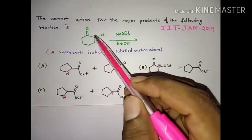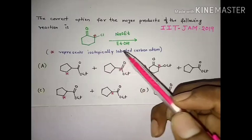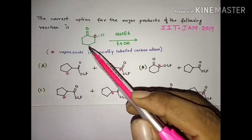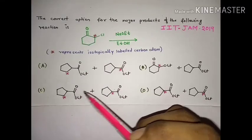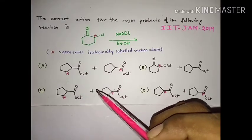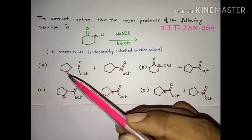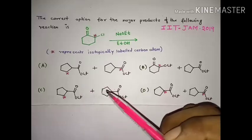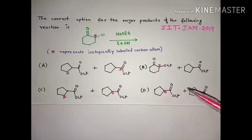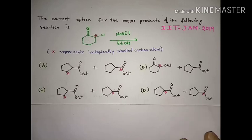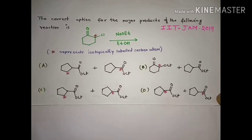The star represents the isotopically labeled carbon atom. We have to derive the mechanism and determine which product will form. In two options the products are the same but the position of the star - the labeled carbon - is different. There are three options that are almost the same. To distinguish between them, we have to understand an important concept: isotopes in organic chemistry.